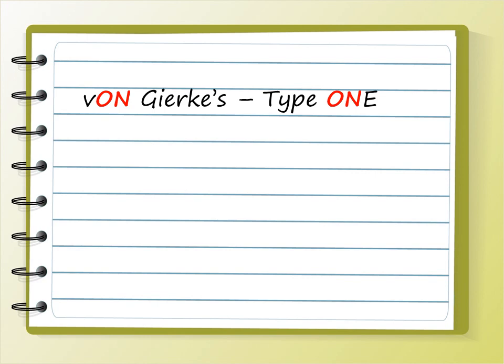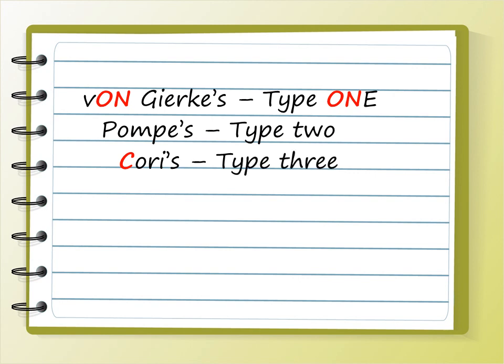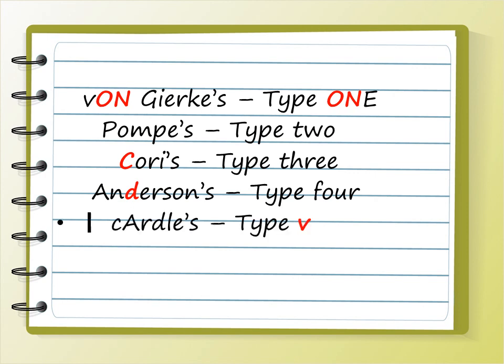The first one is Von Gierke — 'Von' somehow sounds like 'one,' so it is type 1. Pompe is type 2 — just remember that. The next one is Cori — the letter C is the third alphabet, so it is type 3. The next one is Anderson's — the letter D is the fourth alphabet, so it is type 4.